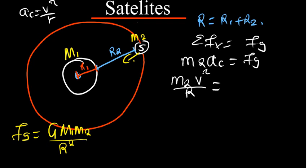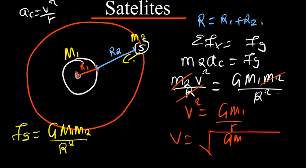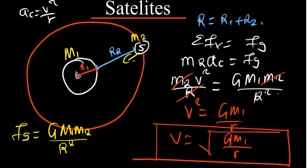Centripetal acceleration is V squared divided by R, so we have M2 times V squared divided by R equal to G times M1 times M2 divided by R squared. We can cancel M2 from both sides and cancel one factor of R, leaving us with V squared equals G times M1 divided by R.